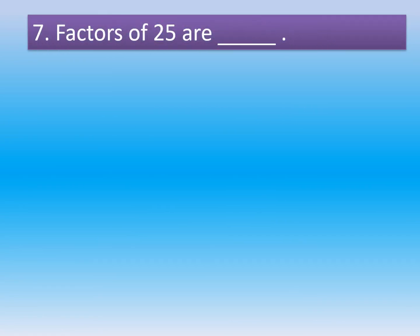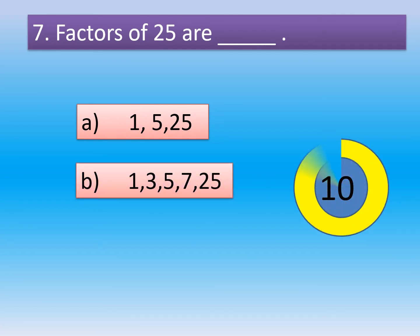Question 7. Factors of 25 are dash. A, 1, 5, and 25. B, 1, 3, 5, 7, and 25.